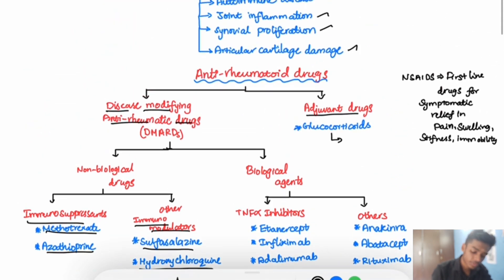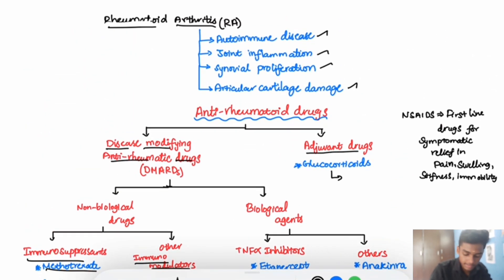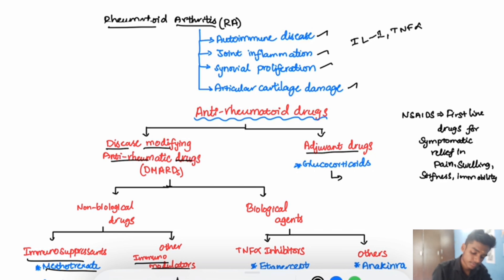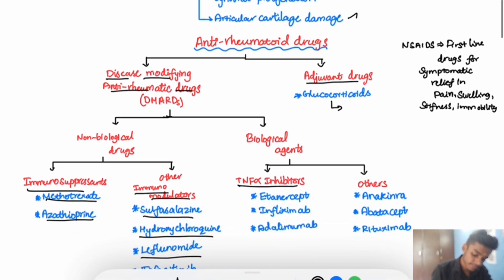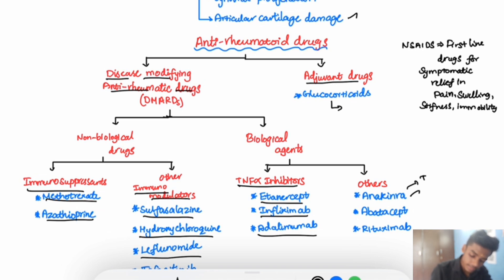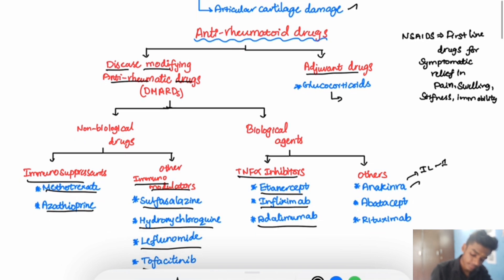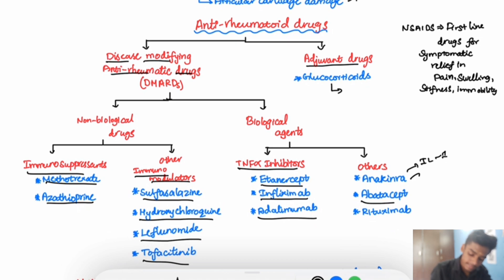The main cytokines produced during rheumatoid arthritis are interleukin-1 and TNF-alpha. So we have TNF-alpha inhibitors like etanercept, infliximab, and adalimumab. Anakinra is an interleukin-1 receptor antagonist. We will also see about abatacept and rituximab further.